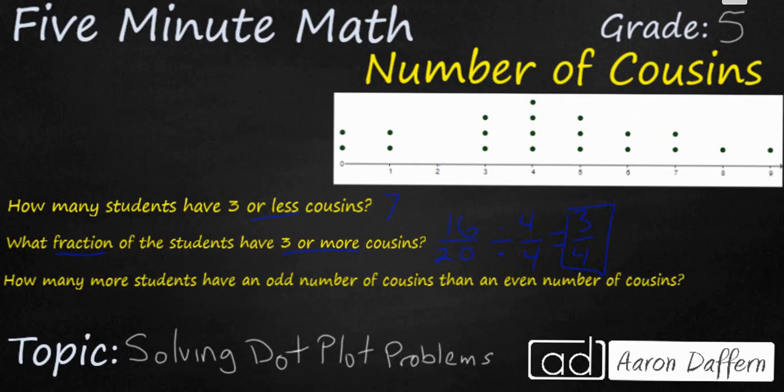Finally, we have a two-step problem here. How many more students have an odd number of cousins than an even number of cousins? So we need to total up the students that said they had an odd number of cousins. Two students that said they had one cousin, three students that said three, three students that said five, two students that said seven, and one student that said nine. So if you add all that up, you're going to get 11 cousins. I'm going to put an 11 right there for odd.